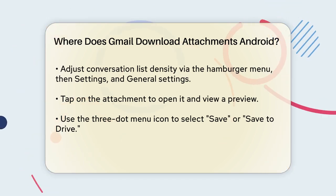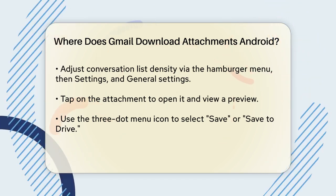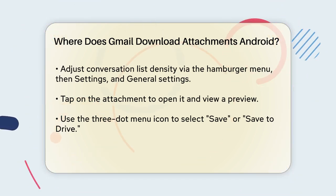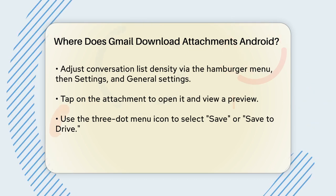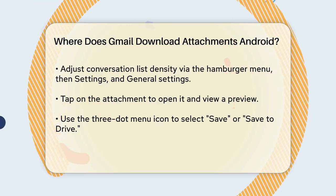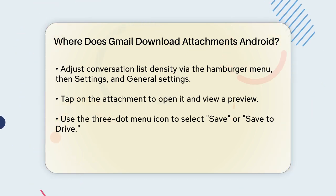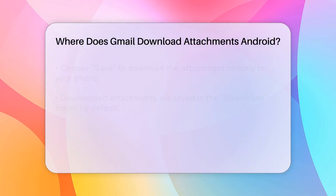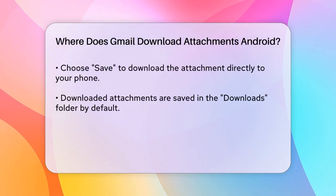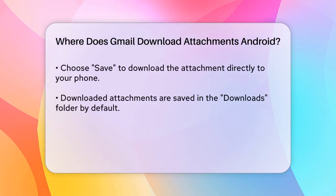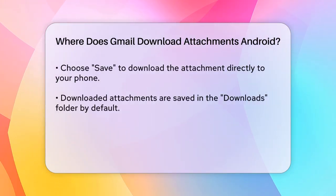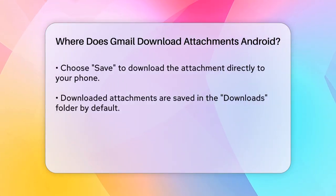Once you've located the attachment, tap on it to open it. You'll see a preview of the attachment. Now, tap the three-dot menu icon at the top right corner and select Save or Save to Drive. If you prefer to download it directly to your phone, choose the Save option.